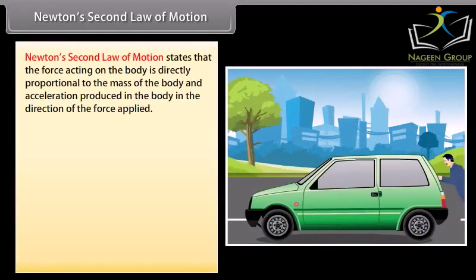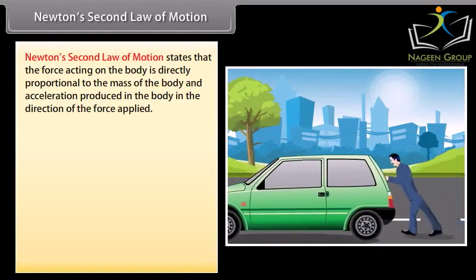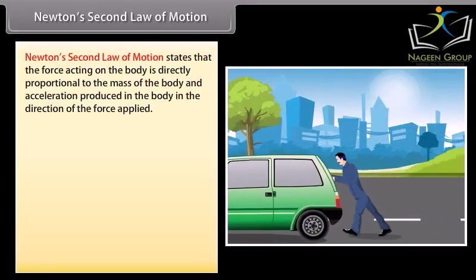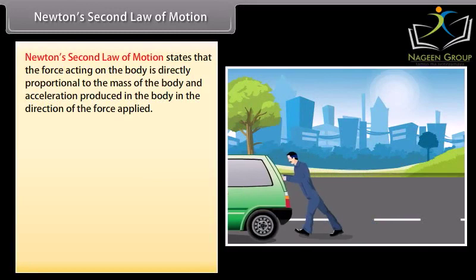Newton's second law of motion states that the force acting on the body is directly proportional to the mass of the body and acceleration produced in the body in the direction of the force applied. F is equal to M into A, where F is equal to force, M is equal to mass, A is equal to acceleration.